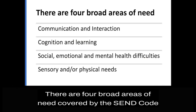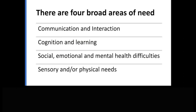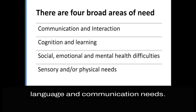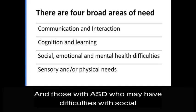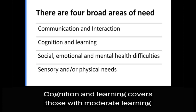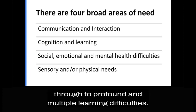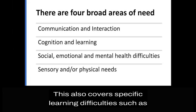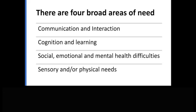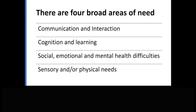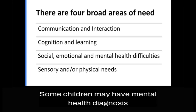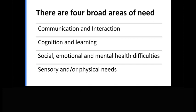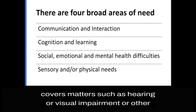There are four broad areas of need covered by the SEND Code of Practice. The first is communication and interaction, which includes children and young people with speech, language and communication needs and those with ASD who may have difficulties with social interaction. Cognition and learning covers those with moderate learning difficulties through to profound and multiple learning difficulties, and also covers specific learning difficulties such as dyslexia. The third category is social, emotional and mental health difficulties, which may include those who are withdrawn or who have challenging behaviour, and some children may have mental health diagnoses or ADHD. The fourth category of sensory and/or physical needs covers matters such as hearing or visual impairment or other physical disabilities.